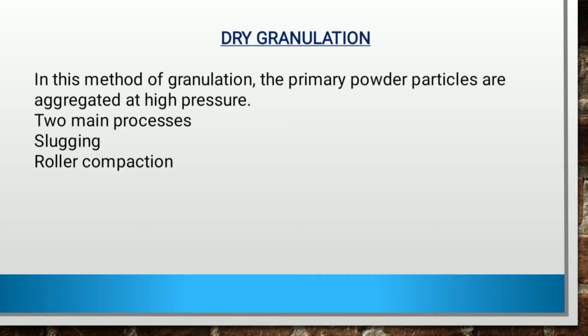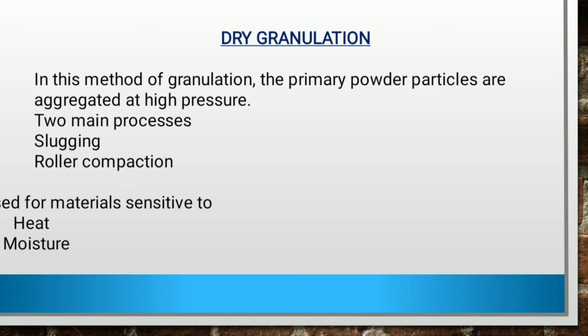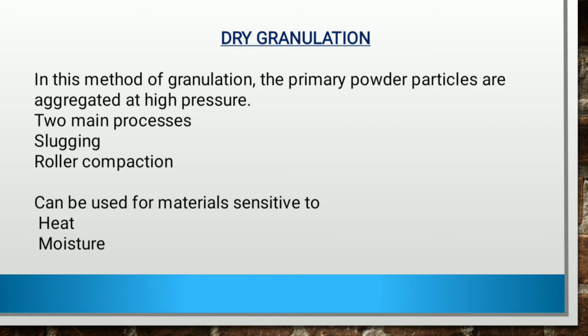The process is carried out using a slugging tool or a roller compactor, i.e., tablet press machine. It is important to note that if a tablet press is used for dry granulation, the powder may not possess enough natural flow to feed the product uniformly into the cavity, resulting in varying degrees of densification leading to non-uniform granules when they are milled. Dry granulation is used for materials sensitive to heat and moisture.